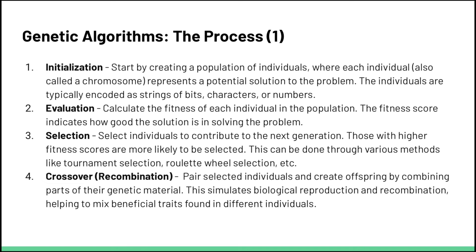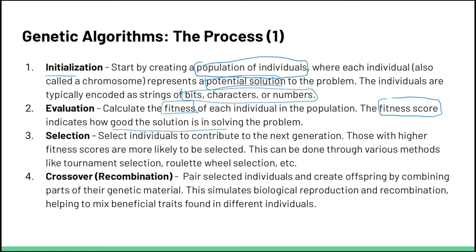The first process in genetic algorithms is initialization. We start by creating a population of individuals where each individual represents a potential solution to our problem. This may be a population already given through data collection, but we're starting with a bunch of possible solutions. These are typically encoded as strings of bits, characters, or numbers — basically a list or collection of information. Next, we calculate the fitness of each individual in the population, looking at how well each string fits some pre-set criteria, and based on that we give it a fitness score. The fitness score indicates how good the solution is.